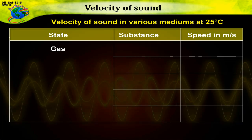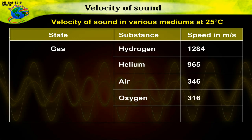Now, substances which are gas. Hydrogen, speed is 1284. Helium, 965. Air, 346. Oxygen, 316. Sulfur dioxide, 213.